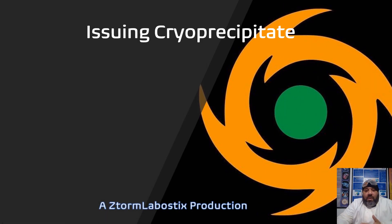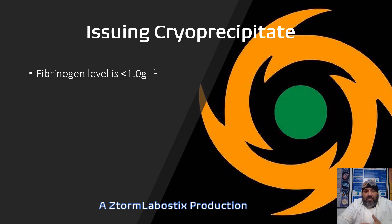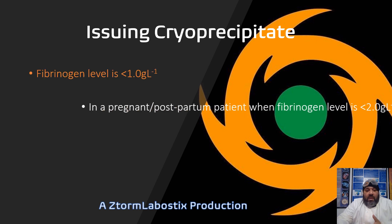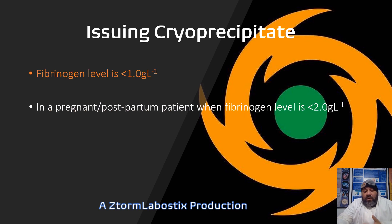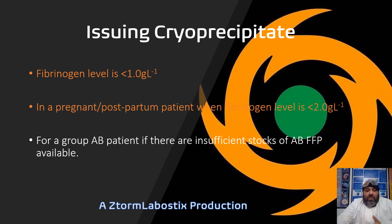Issuing cryoprecipitate is somewhat similar to fresh frozen plasma, although it does have specific conditions. The fibrinogen level has to be less than one gram per litre, or in a pregnant or postpartum female patient where the fibrinogen level is less than two grams per litre. Also, for a group AB patient, if there are insufficient stocks of AB fresh frozen plasma available, cryoprecipitate can be used.